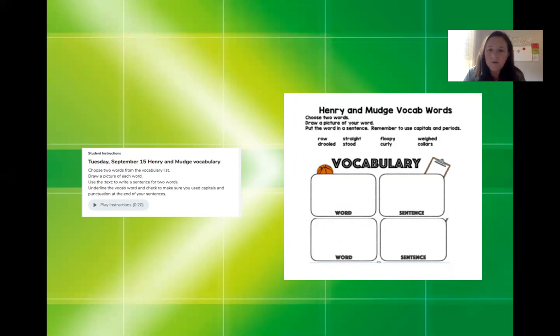So you might choose row and you might choose drooled. So for number one, you could draw a picture of a row or something, and then you need to put it in a sentence. And then if you chose drooled or whatever other word you choose, you would put it in the box, draw a picture, and then write a sentence. You'll find the instructions on the seesaw as well. So you can play the instructions if you forget what to do.